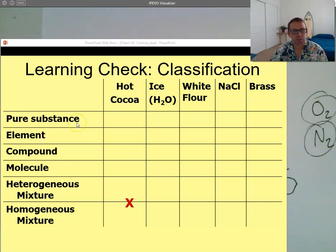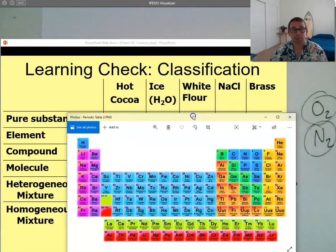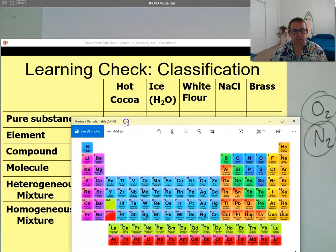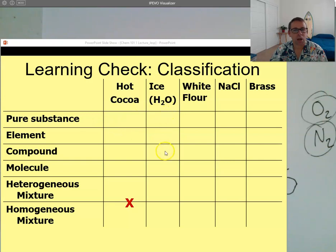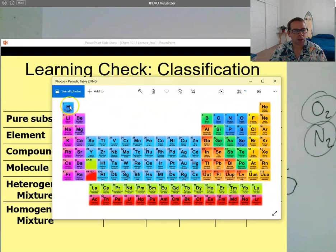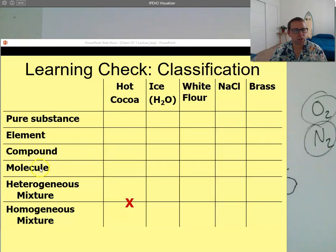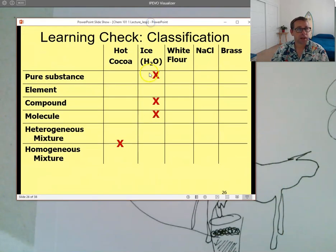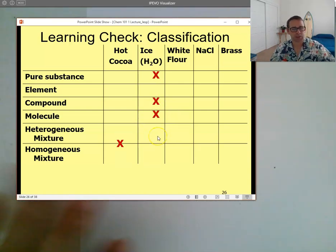How about ice? Pure substance — very good. Is it an element? It's actually not an element because it's a combination of elements — we have hydrogen and oxygen coming together. If it was just hydrogen or just oxygen, those are elements on the periodic table. But here it's a pure substance. Is it a compound? Yes, it is a compound. And it is a molecular compound because hydrogens and oxygens are both non-metals, so it's a molecule. Ice is a pure substance, a compound, and a molecule.